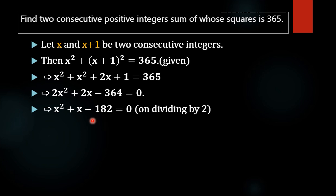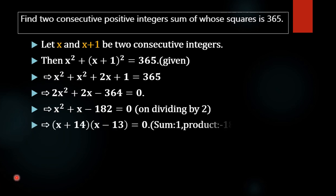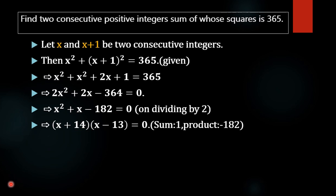To solve this quadratic equation, note that the sum of two numbers is 1 and the product is negative 192. Those numbers are 14 and negative 13, since 14 × (−13) = −182 and 14 + (−13) = 1. This gives x equals 13 or x equals negative 14.